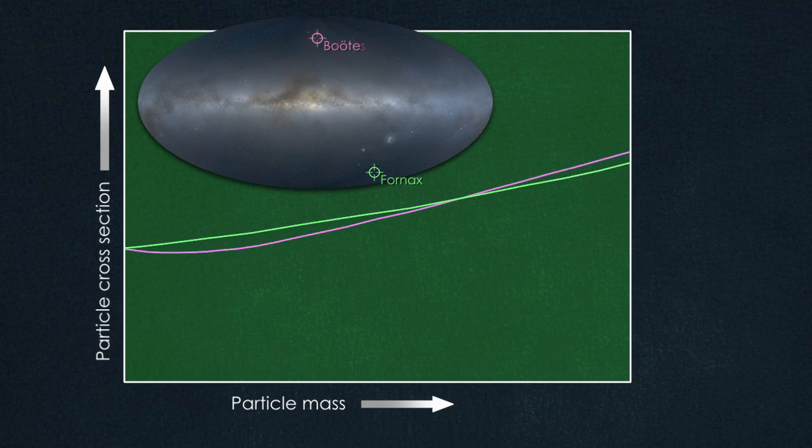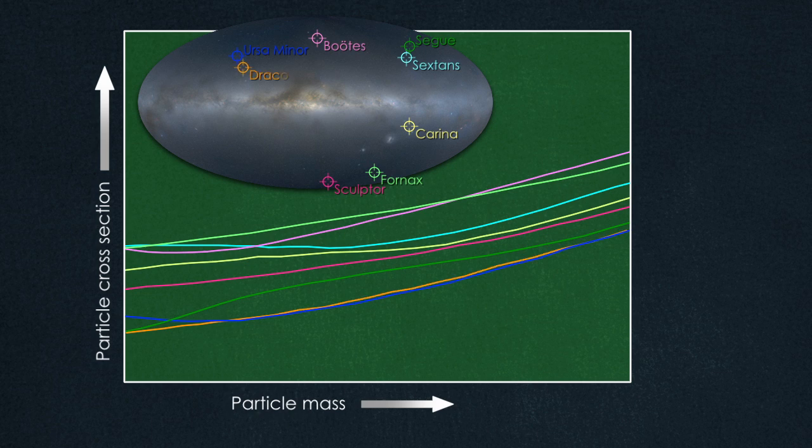Using two years of data, Fermi scientists explored ten dwarf galaxies for any sign of gamma rays from WIMP annihilation.